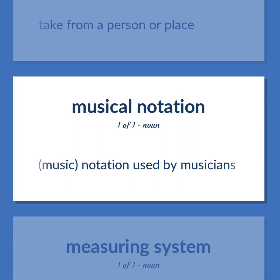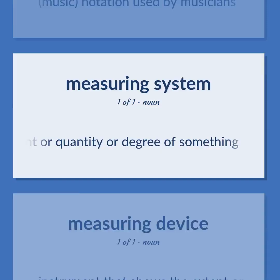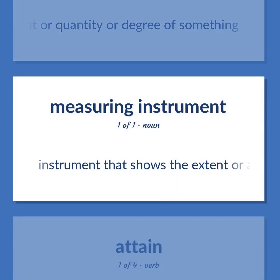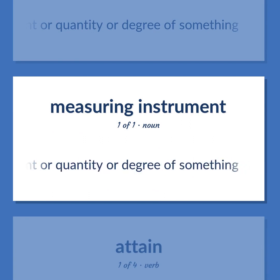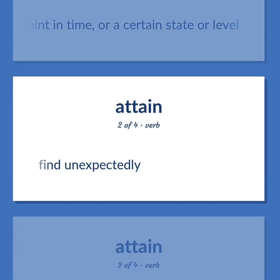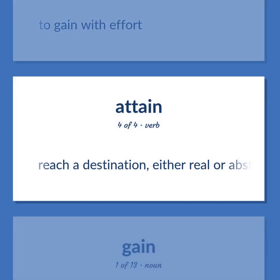Note: Music notation used by musicians. Meter: Instrument that shows the extent or amount or quantity or degree of something. Gain: Reach a point in time, or a certain state or level. Find unexpectedly. To gain with effort. Reach a destination, either real or abstract.